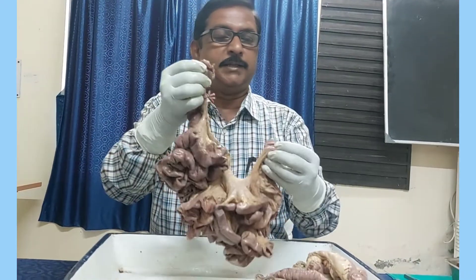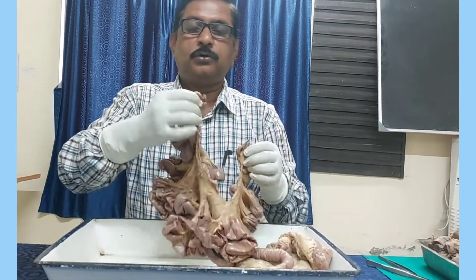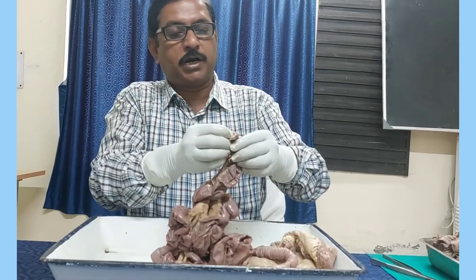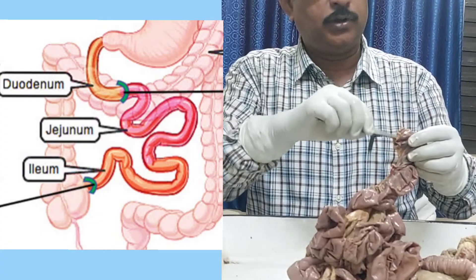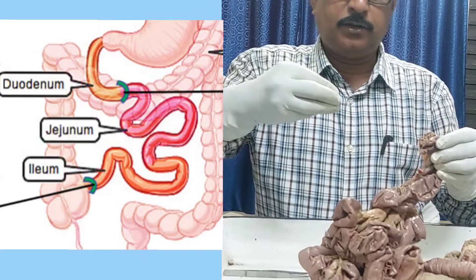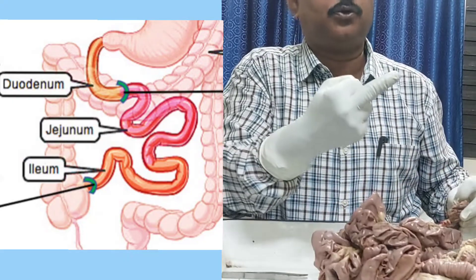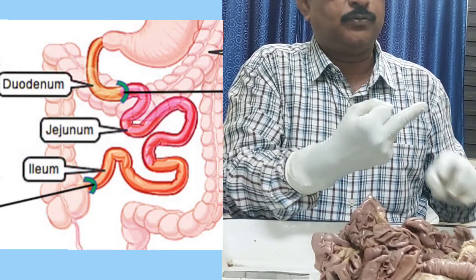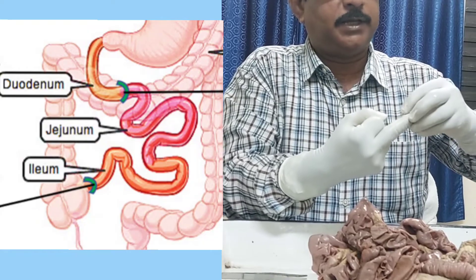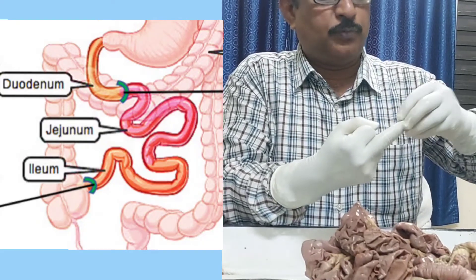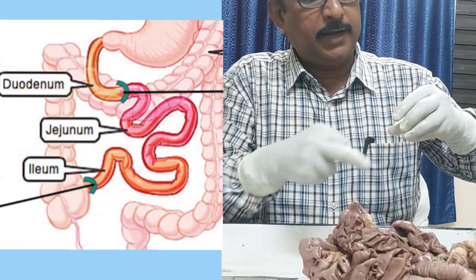This is the jejunal side and this is the ileal side — we have already identified the jejunal end and the ileal end. Now, how to hold it? The jejunum starts from the fourth part of the duodenum — where the fourth part of the duodenum ends, the jejunum starts at the duodenojejunal junction. The fourth part runs from right to left and ascends upward, so this is the fourth part ascending. As the fourth part ascends superiorly and posteriorly, the jejunal opening will be directed anteriorly and inferiorly.